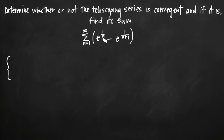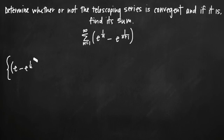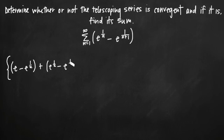When we plug in n equals 1, we get e to the 1 over 1, or just e to the 1, so that's e. For the second term with n equals 1, we get 1 plus 1 in the denominator, which is 2, so we get minus e to the 1 half. That's our first term in the series. When we plug in n equals 2, we get e to the 1 half minus e to the 1 third.